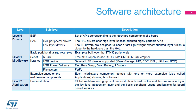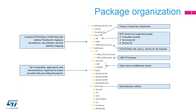Level 2 is composed of a single layer, which consists of a global real-time and graphical demonstration, based on the middleware service layer, the low-level abstraction layer, and basic peripheral usage applications for board-based features. Like all STM32Cube firmware packages, the STM32CubeG4 firmware solution comes in a single zip file, organized in several main folders as shown in this slide.